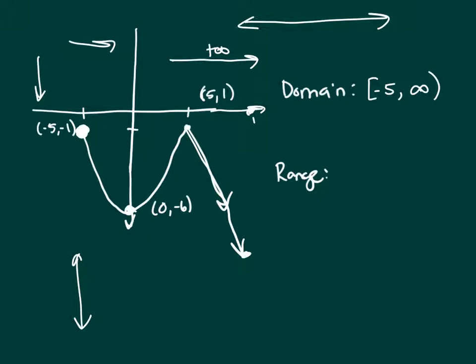Your graph, the greatest y value on your graph is negative 1. So this thing goes to negative 1. But where does your graph start at in terms of y values?